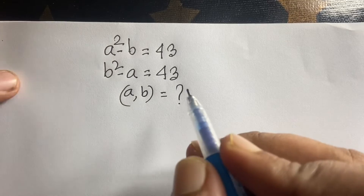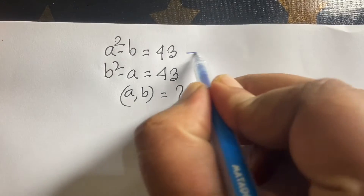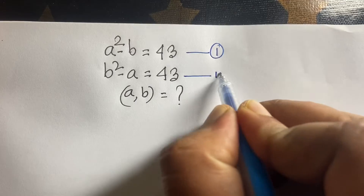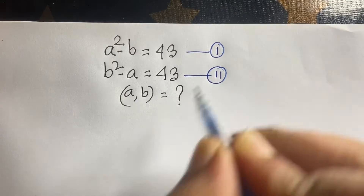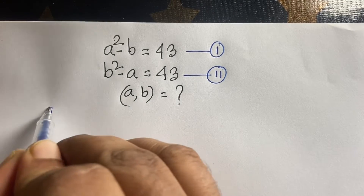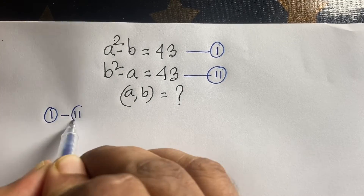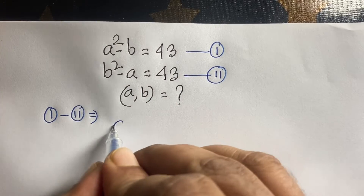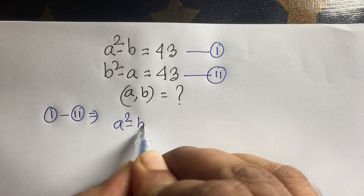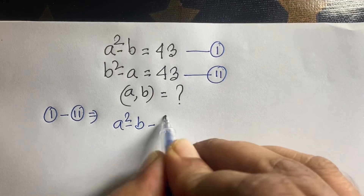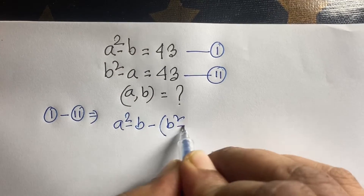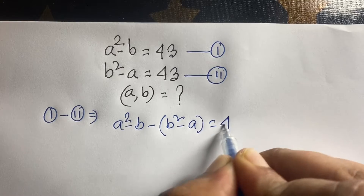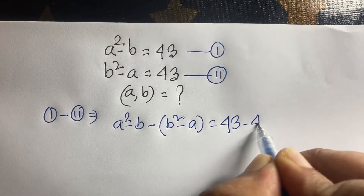So how do we solve this question? I will call the first expression our first equation and the second our second equation. I subtract the first equation from the second equation, so it will be A squared minus B, minus B squared minus A, is equal to 43 minus 43.